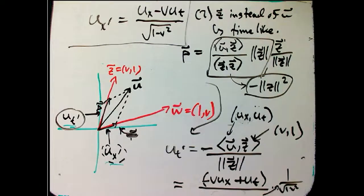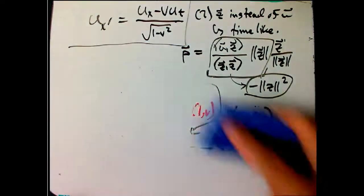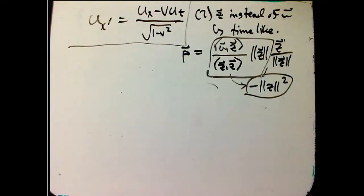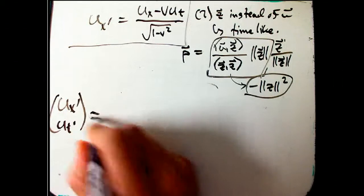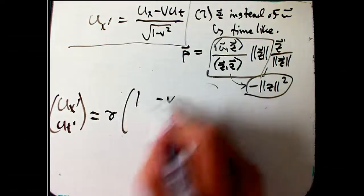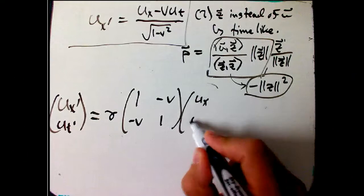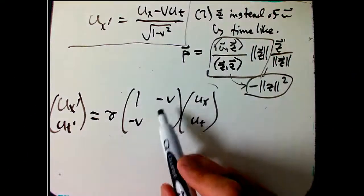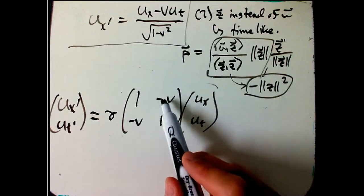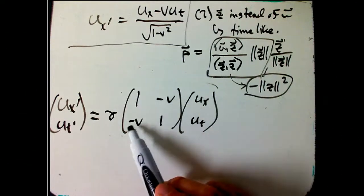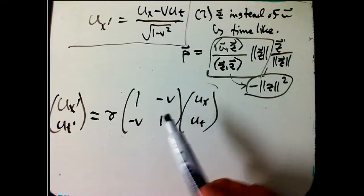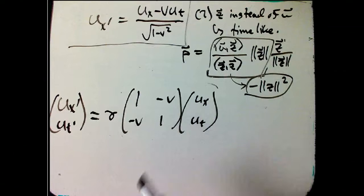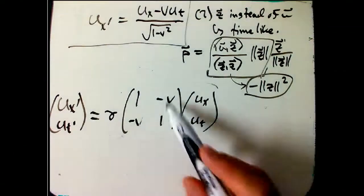And so in the end, what you get is that (ux prime, ut prime) equals gamma times the matrix (1, -v; -v, 1) times (ux, ut). And so that minus came from the minus that's inherent in the Minkowski's scalar product. And then it was going to look like we were going to get a v and a minus 1 from the Minkowski's scalar product again, except that we had to be really careful about what projections mean and what components mean, something I didn't have to be careful about before. And so it actually ends up with just minus v's.